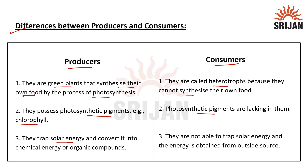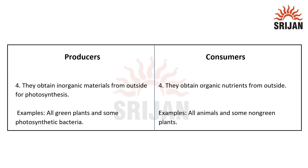Producers can trap solar energy and convert it into chemical energy or organic compounds. Consumers are not able to trap solar energy and hence they obtain energy from an outside source, which is majorly plants.